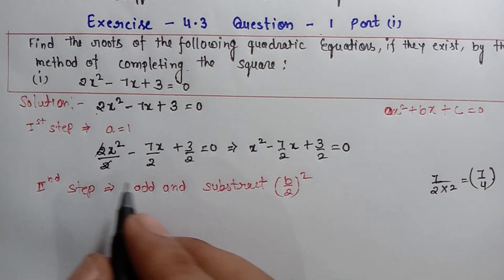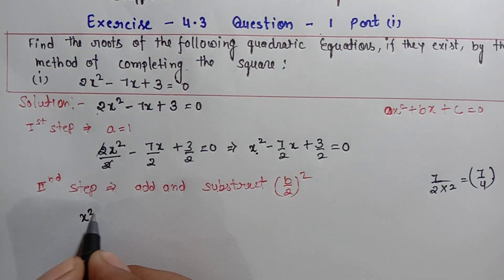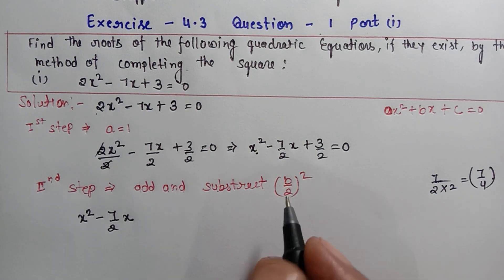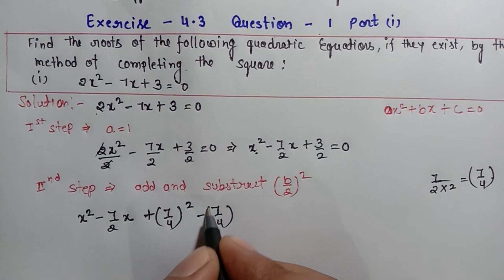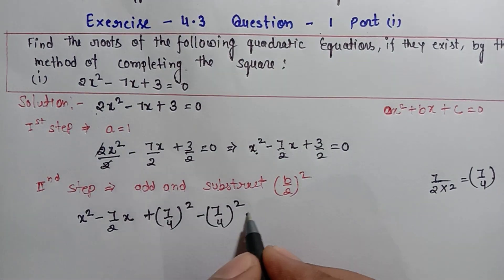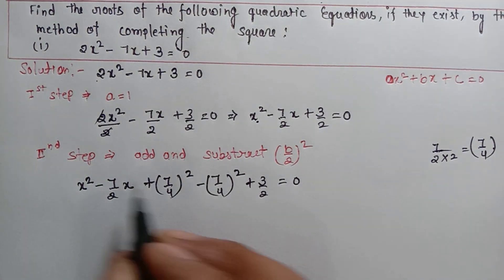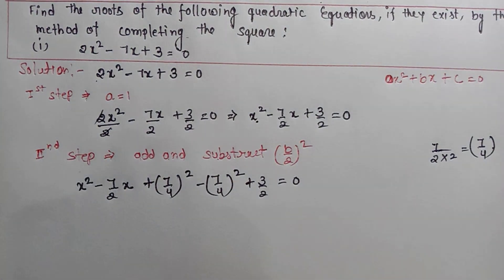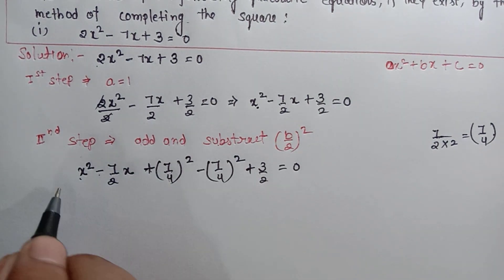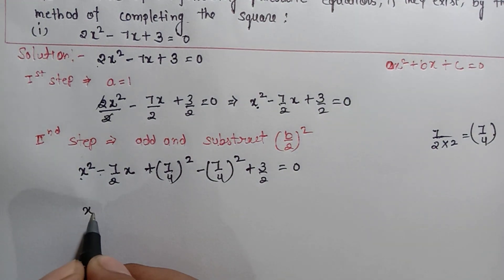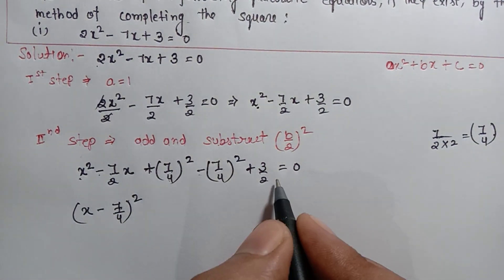इसे हम add भी करेंगे और subtract भी करेंगे। आपके पहले दो terms वैसे ही note करने हैं: x square minus 7 by 2 x, और अब plus (7 by 4) square minus (7 by 4) square plus 3 by 2 equals to 0। यहाँ a square minus 2ab plus b square की identity बन रही है, इसलिए यह x minus 7 by 4 whole square बन जाएगा।